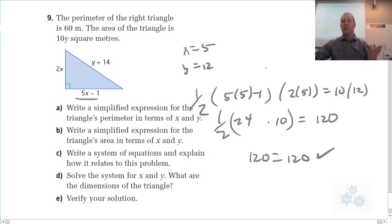That seems to check out perimeter. Let's quickly check perimeter out. So, let's see. 2 times 5, that's 10, plus, well, 5 times 5 minus 1, we said it was 24, plus Y is 12, plus 14, that's 26. So, 10, and that's 34, and that's 50, that's 60. So, 60 does equal 60, we're good.